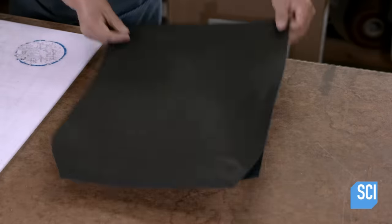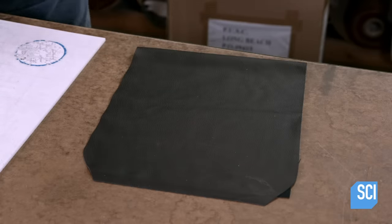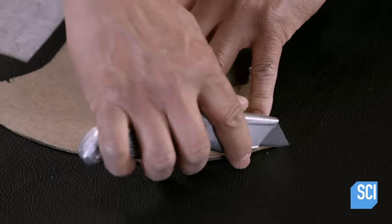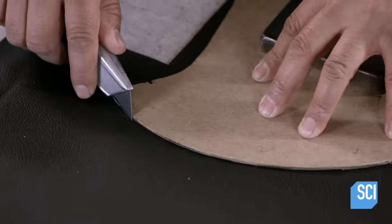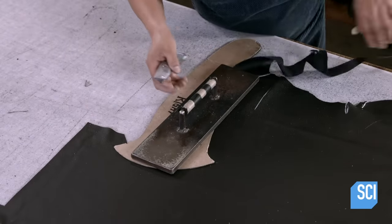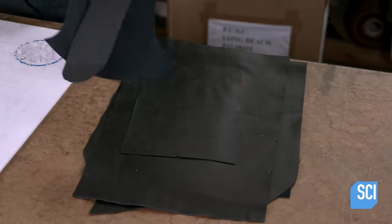By cutting carefully, he'll be able to get all the leather he needs for one chair from this large hide. That's important because color and grain can vary from hide to hide. Using pieces from the same one will give the chair a consistent look and texture.